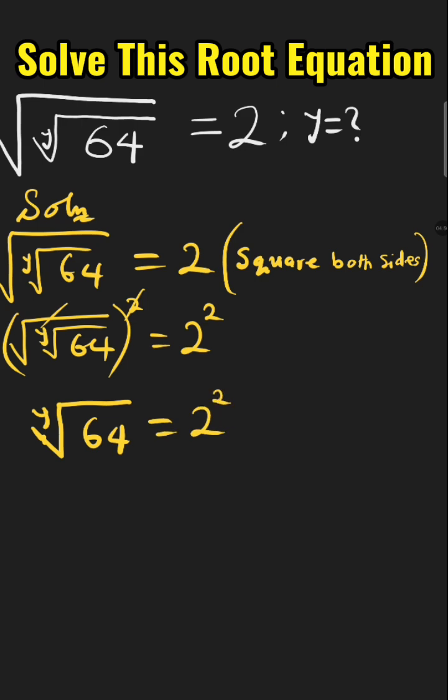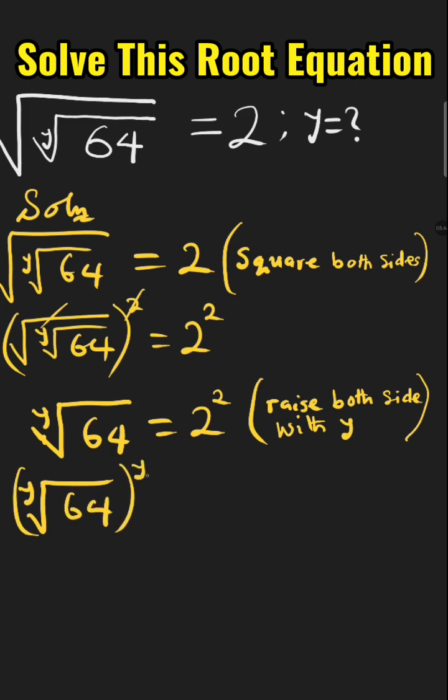Next, we raise both sides to the power of y. That is white root of 64 all raised to the power of y equals 2 raised to the power of 2 all raised to the power of y.